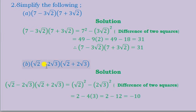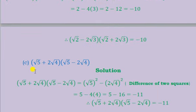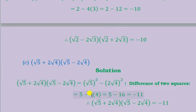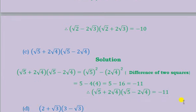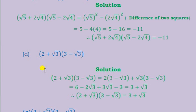Part b is still the same — the sign is the only difference, so it is still a difference of two squares. You square root 2 and square 2 root 3 accordingly, and you come up with negative 10 as the answer. Part c is also the same concept — you square root 5 and square 2 root 4. 2 squared is 4 and root 4 squared is 4, so 4 times 4 is 16. The result is 5 minus 16, which is negative 11.